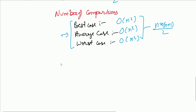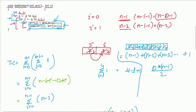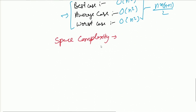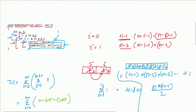Finally, the space complexity of bubble sort: it does not use anything extra beyond the input array relative to n. It uses only two variables, i and j, which are not comparable to n — whether n is 1,000 or 1 million, we still use only two variables. So the space complexity of bubble sort is O(1). Try to write the code for bubble sort, run it on an unsorted array, and verify you get the correct sorted result. Thank you.